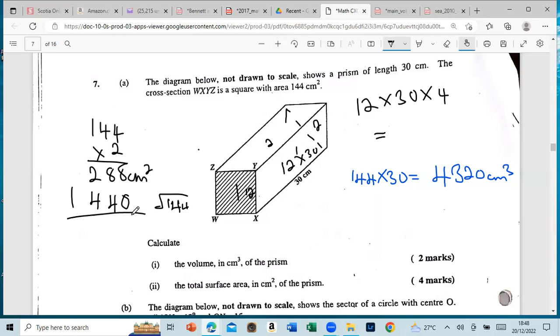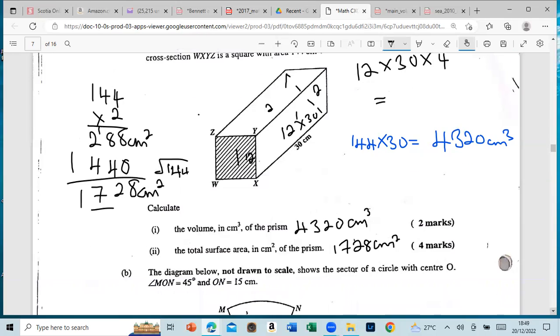So all six sides are accountable for now, so we can simply add it. That's four marks, and remember it's area, so it's centimeter square. So this works out to 4,320 and this works out to 1,728. That's six marks at O level.